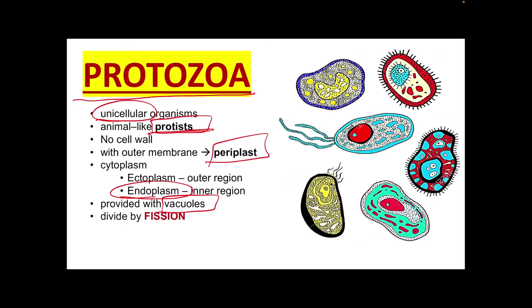Protozoa divide by binary fission, meaning they split into parts to increase in numbers. The replication only occurs in the trophozoite stage, and it is accomplished by multiplication of the nucleus via binary fission.